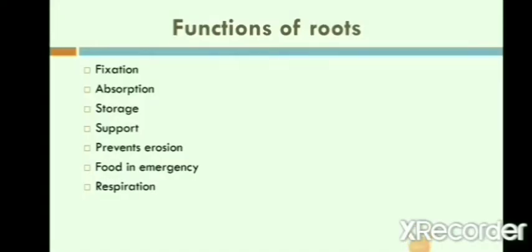Functions of roots. Roots have different functions. Fixation: roots hold the plant and bind it firmly to the ground. That is why plants or trees do not get uprooted when there is a strong wind. Roots help the plant to absorb minerals and water from the soil, and then provide it to the plant to prepare food. Many roots store food, which helps the plant to survive. We also eat some of these roots.